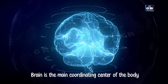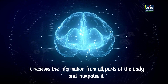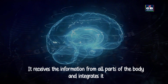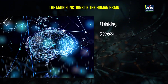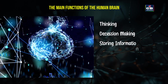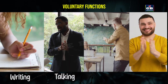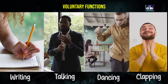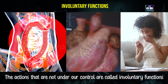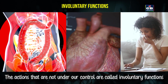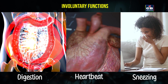The brain is the main control center of the body. It collects information and sends instructions. It controls thinking, emotions, decision making, memory and body functions. Voluntary functions are those under our control, like writing, talking and dancing. Involuntary functions are not under our control, like digestion, heartbeat and sneezing.